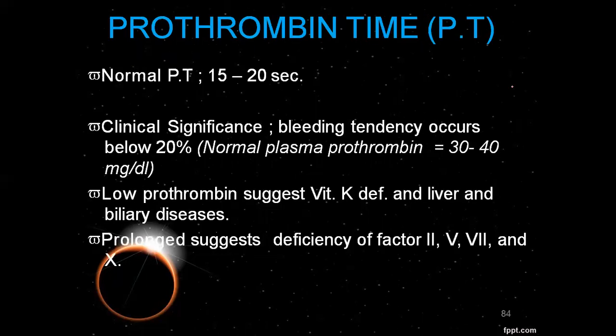Prothrombin time is normally 15 to 20 seconds. Its clinical significance is that a bleeding tendency occurs when plasma prothrombin falls below 20% of normal, which corresponds to 30 to 40 mg per deciliter. Prolonged PT is caused by vitamin K deficiency, liver or biliary diseases, and deficiency of factors 2, 5, 7, and 10.